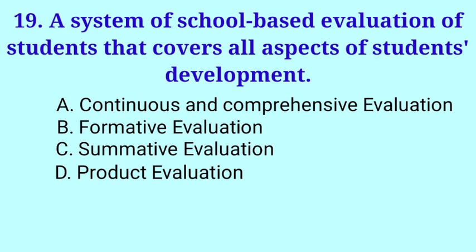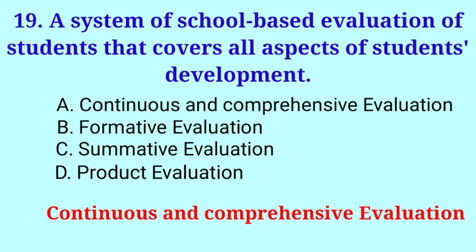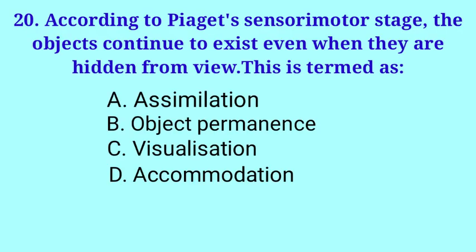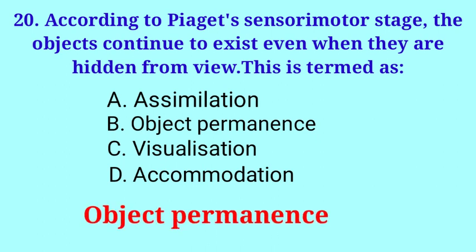A system of school-based evaluation of students that covers all aspects of students' development. Answer: Continuous and comprehensive evaluation. According to Piaget's sensory motor stage, the objects continue to exist even when they are hidden from view. This is termed as Object Permanence.